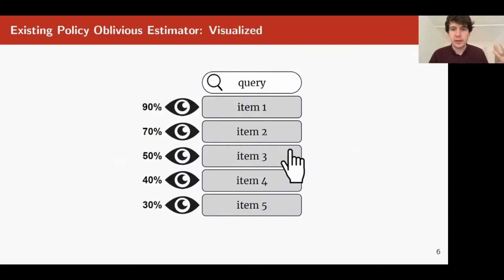Let's say that we have this ranking setting with five items. There's different examination probabilities per rank. So a click on item 3, on rank 3, where 50% of people examine the position, will be weighted twice because it will be weighted by 1 divided by 0.5. And this corrects for the 50% of the people that probably didn't even look at this position.